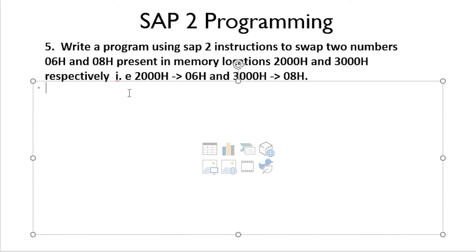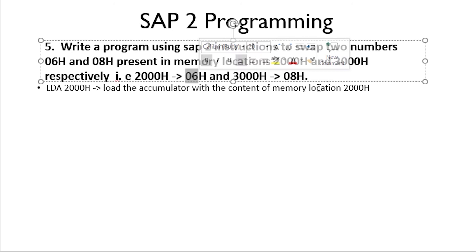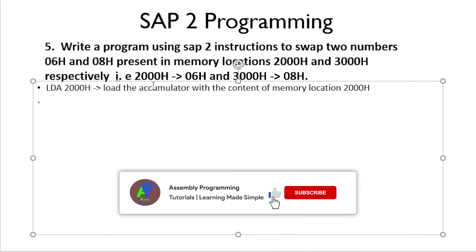First we need to load the accumulator with the designated address. To load the accumulator in SAP 2 we use the instruction LDA 2000H. By this instruction we have loaded the content of memory location 2000H, which is 06H, into the accumulator.